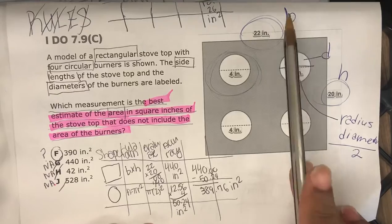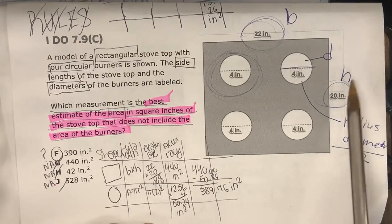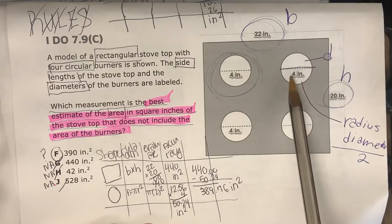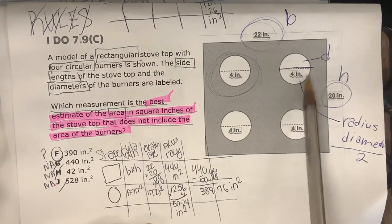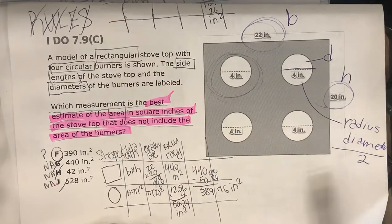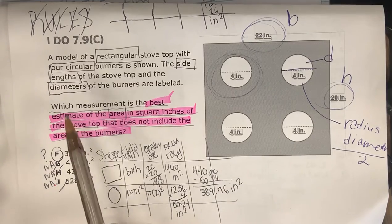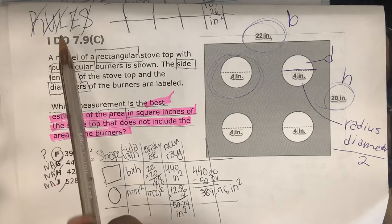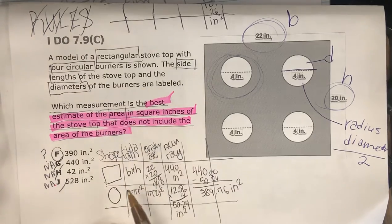I labeled the diagram, so I have the base and the height of the stove top, then I have the diameter of the circles. I labeled those. Remember, the radius is the diameter divided by 2. So we go to the evaluation part, which we do on our table.